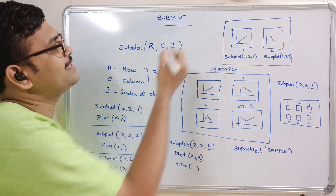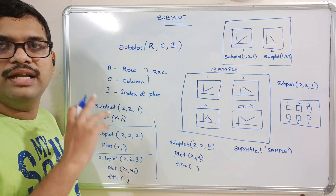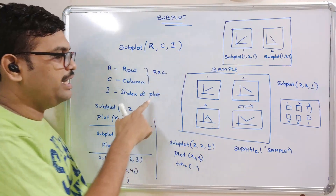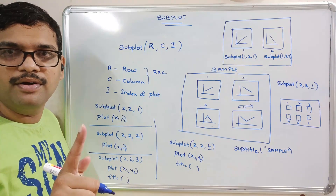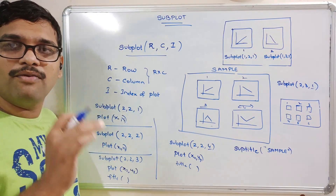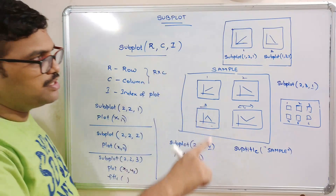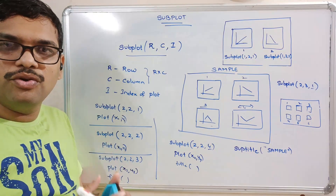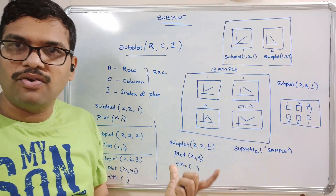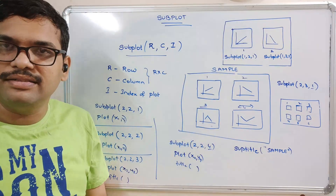So this is the function of subplot — it gives the layout of a plot and shows how to draw multiple plots in a single figure. It takes three parameters: the first is row, the second is column, and the third is the index of the particular plot, which starts with one. The maximum number of plots that can be designed is R into C, that means rows into columns. Now we move on to the system and I will show you by executing a small program demonstrating this subplot function.